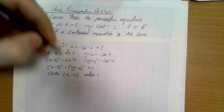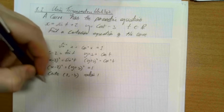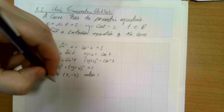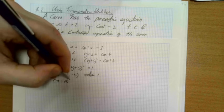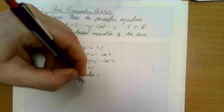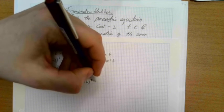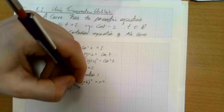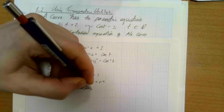And then remembering our general equation for a curve - for a circle rather - (x minus a) squared plus (y minus b) squared equals r squared, for a centre (a, b) and a radius r.